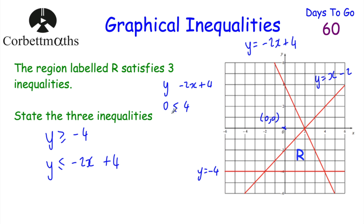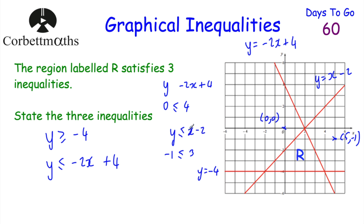For our last line y = x − 2: the region that satisfies it is below that line. Choosing a point below the line — say (5, −1) — substituting in: y = −1 and x − 2 = 5 − 2 = 3. For this to work with a point below the line, the inequality sign goes as −1 ≤ 3, so the inequality is y ≤ x − 2. So we've got our three inequalities — well done if you got those.